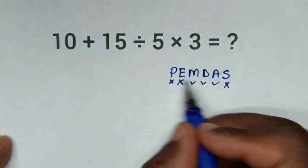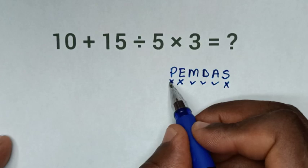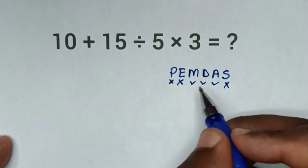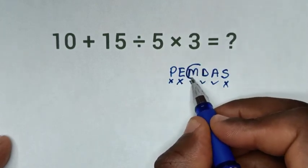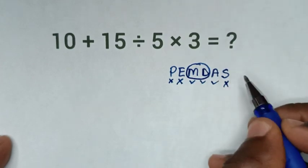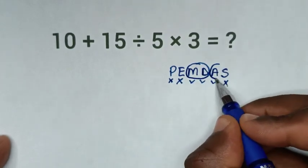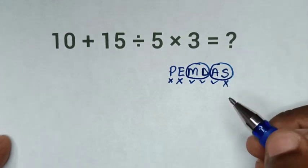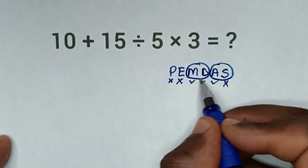From this rule, because we don't have parenthesis or exponents, we are grouping multiplication and division together, and addition and subtraction together. Now we start first with multiplication and division.